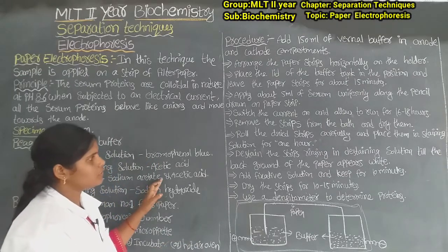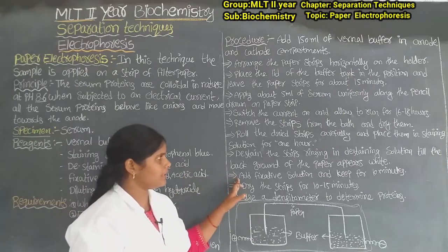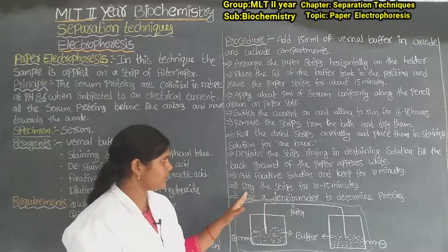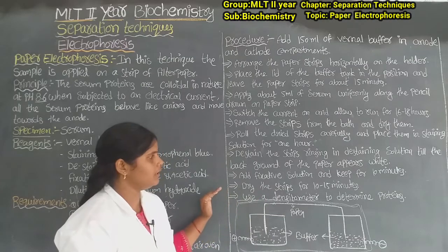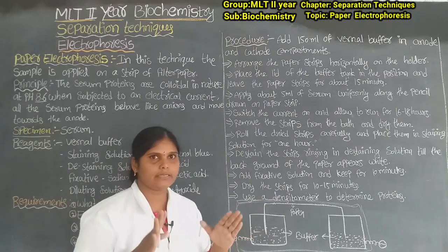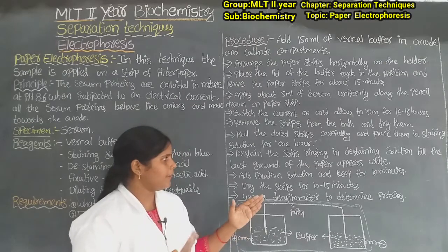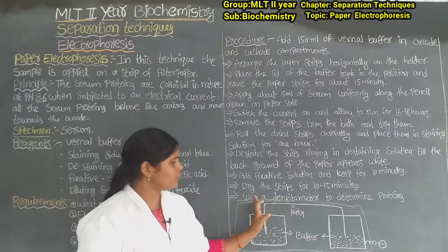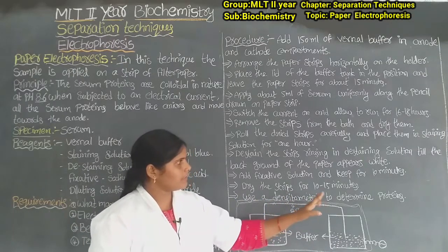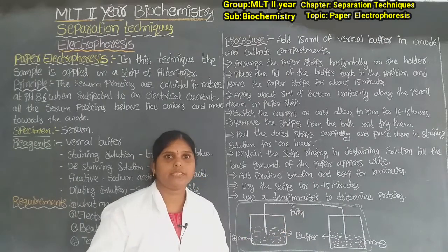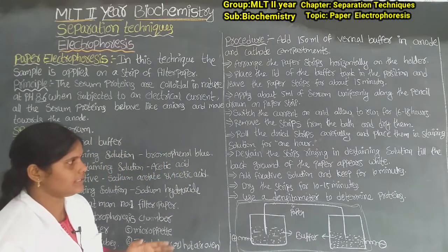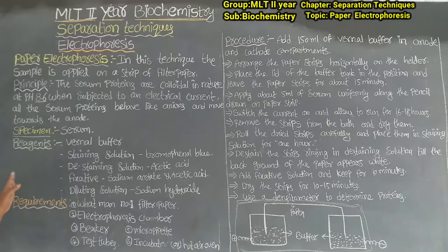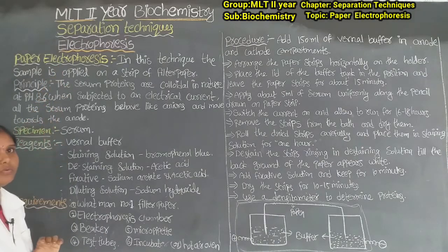We apply the fixative — sodium acetate — for 10 minutes. Next, dry the strip for 10 to 15 minutes. Then use a densitometer to determine the proteins. We apply the densitometer to determine and quantify the serum proteins. That is paper electrophoresis.